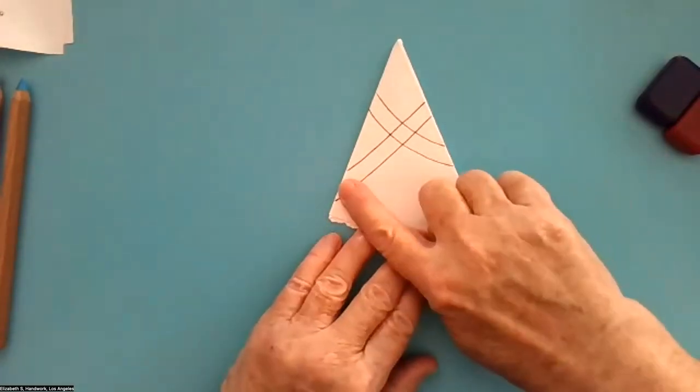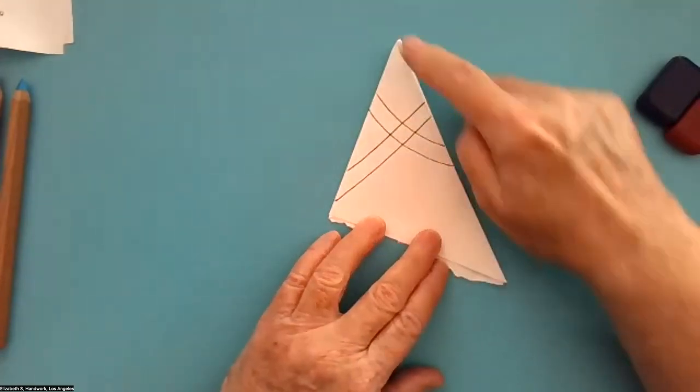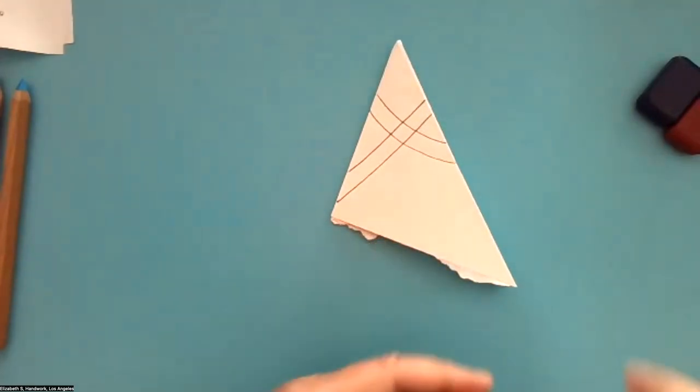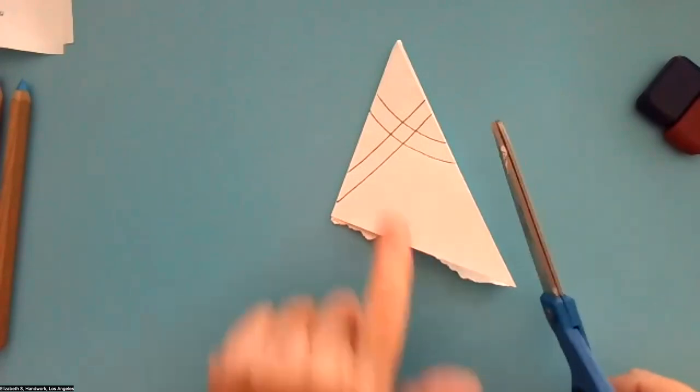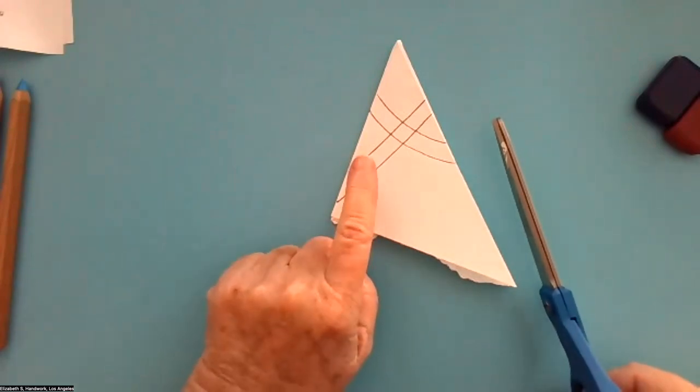So now we've got fold to fold, crisscrossing lines, pointers there. Now we're going to cut everything else out except the train tracks.